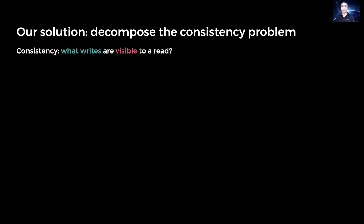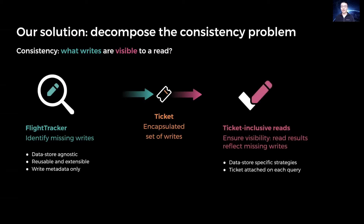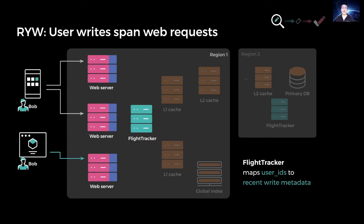Consistency guarantees boil down to what writes are visible to a read. We separate the problem of identifying missing writes from ensuring visibility of those writes on a read. We build a service called FlightTracker to identify and collect metadata for writes that need to be made visible. We encapsulate these write metadata in a ticket and attach this ticket on each datastore read query, which we call ticket-inclusive reads. Each datastore is then responsible to ensure that the read results reflect the writes in the ticket. Assuming async replication finishes everywhere in about 60 seconds, FlightTracker only needs to store 60 seconds of metadata.